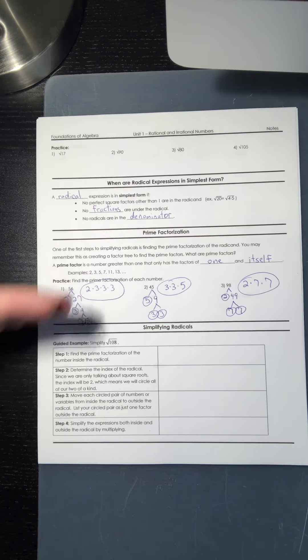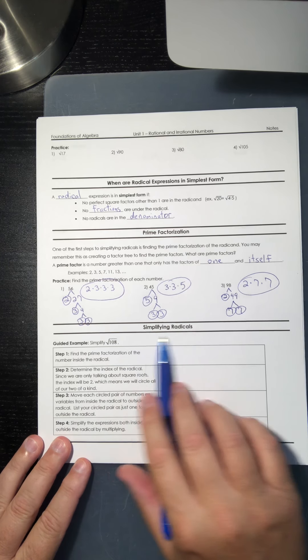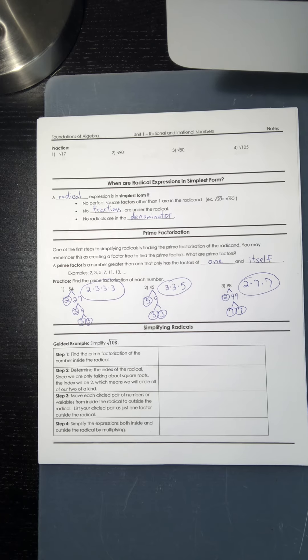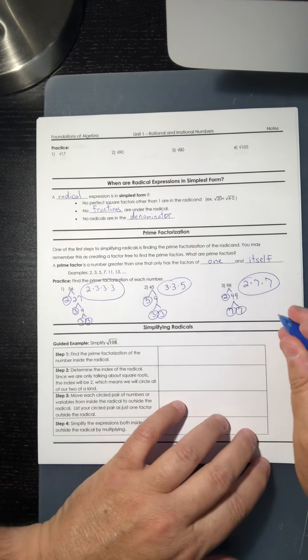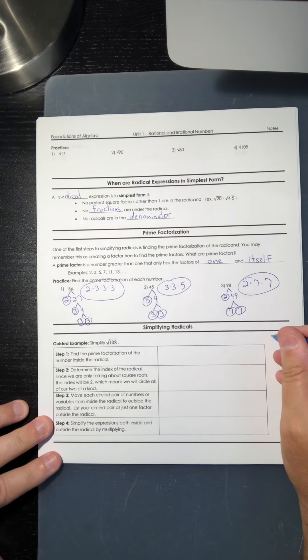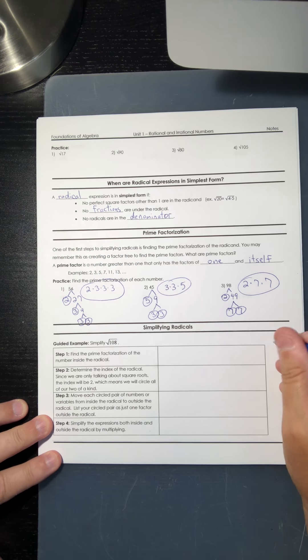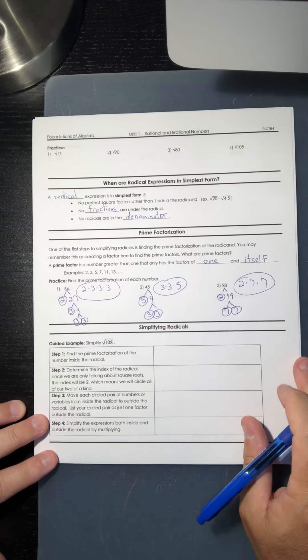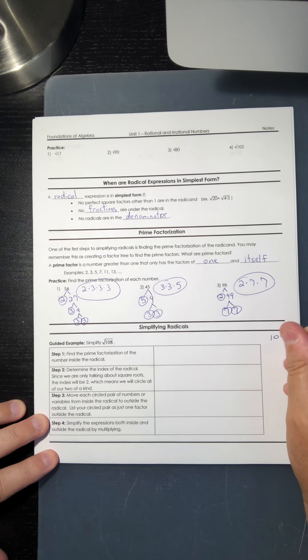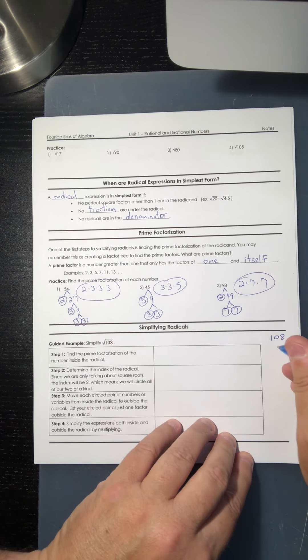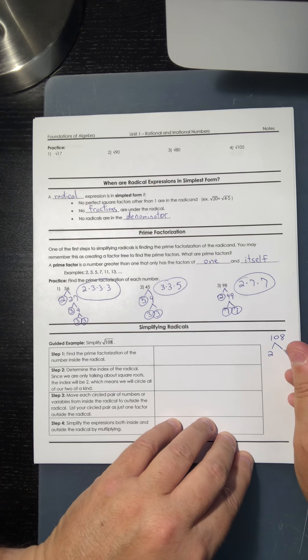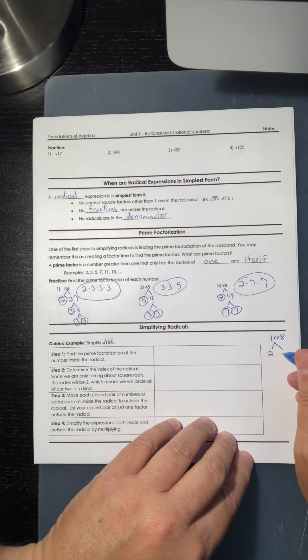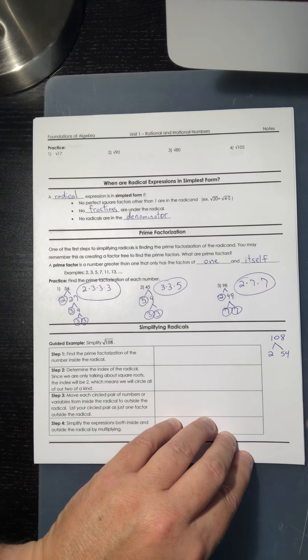Okay, so now we're going to use that in order to simplify radicals. So we're going to simplify the number 108. So off to the side here, let me make sure y'all can still see this over here. I'm going to do the prime factorization of 108. Well, 108 is an even number, so I'm going to say 2. 108 divided by 2 is 54. Again, you could use your calculator to figure that out. So 2 is a prime number, so I'm finished with that side.